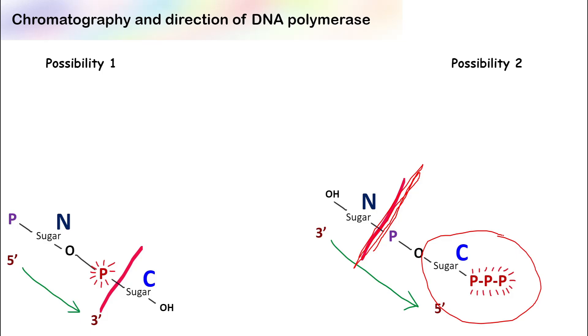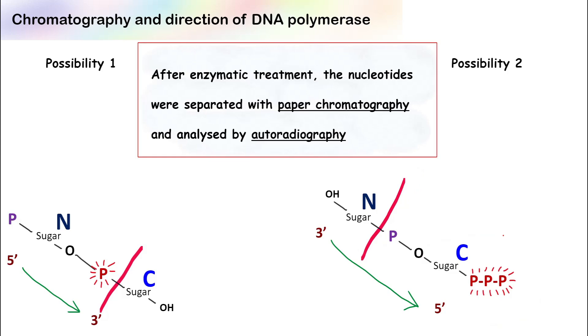So now the question is: how do you find where the radio labeled phosphate is? To find this, after enzymatic treatment, the nucleotides were separated by paper chromatography and analyzed by autoradiography.